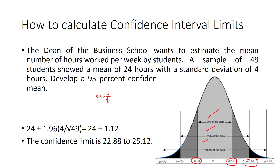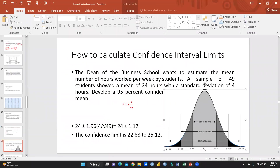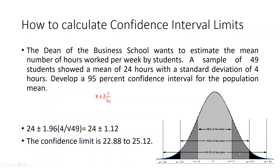Now we will apply this to calculate the confidence interval. The problem: the dean of a business school wants to estimate the mean number of hours worked per week by students. A sample of 49 students showed a mean of 24 hours with a standard deviation of 4 hours. We need to develop a 95 percent confidence interval for the population mean.